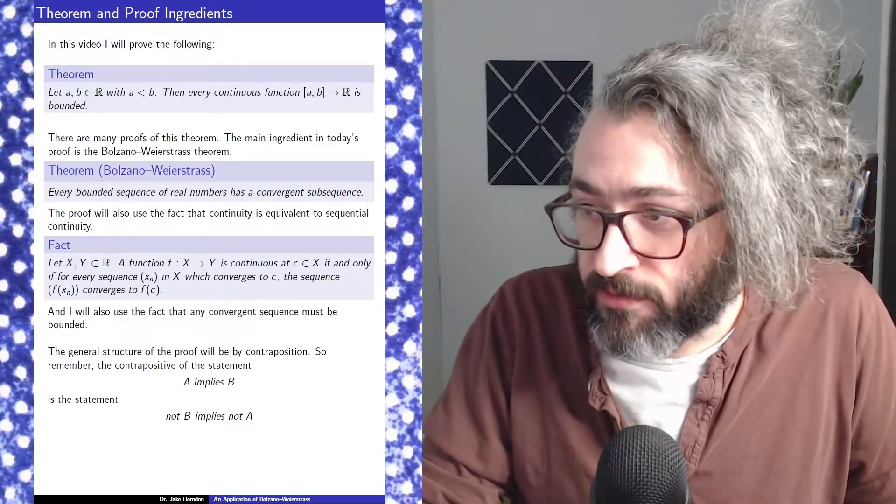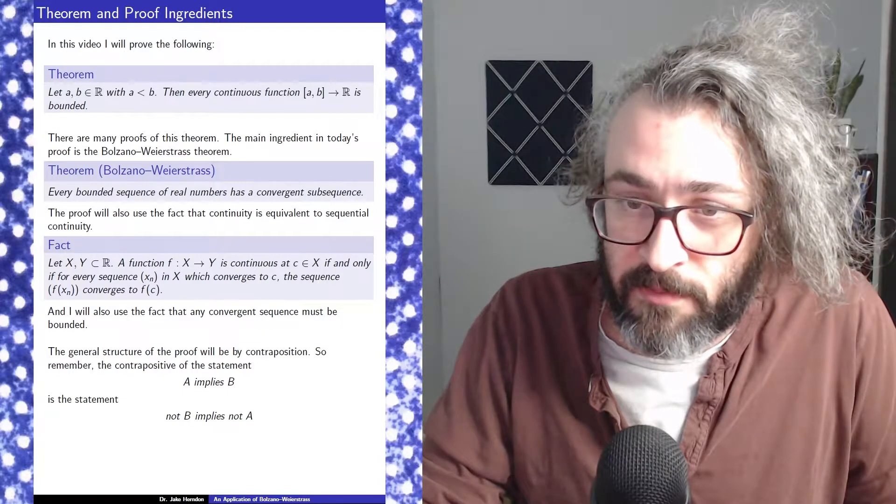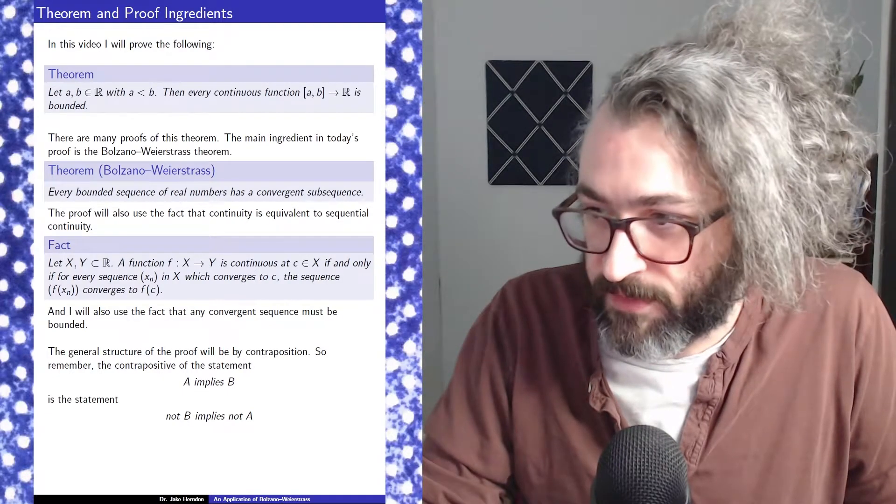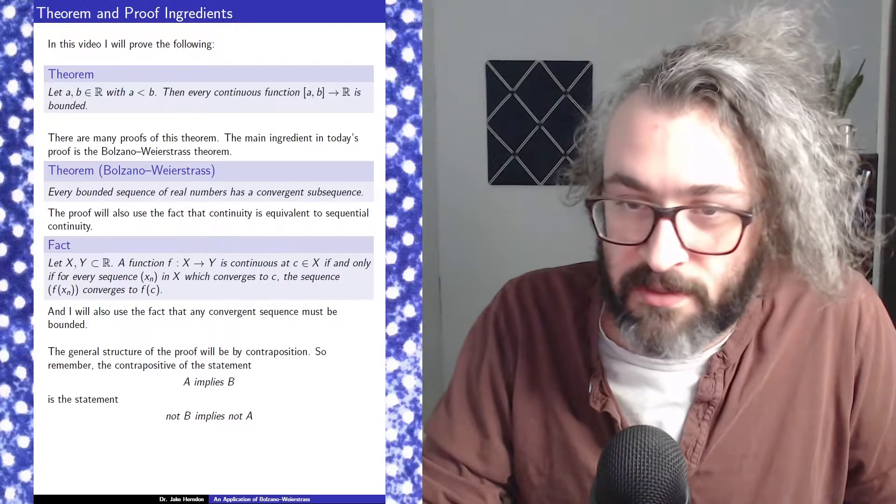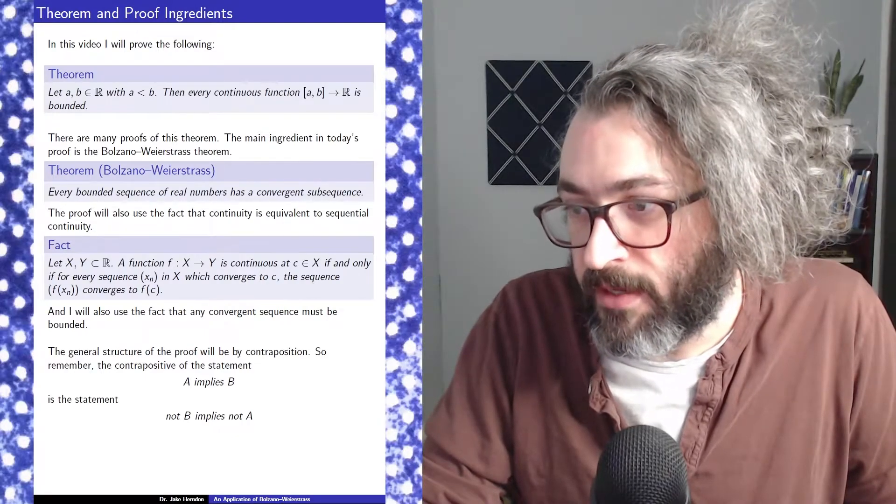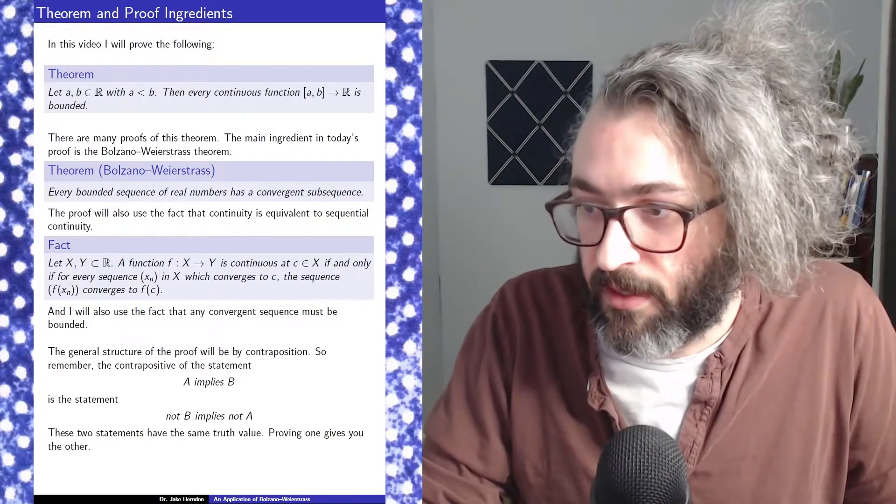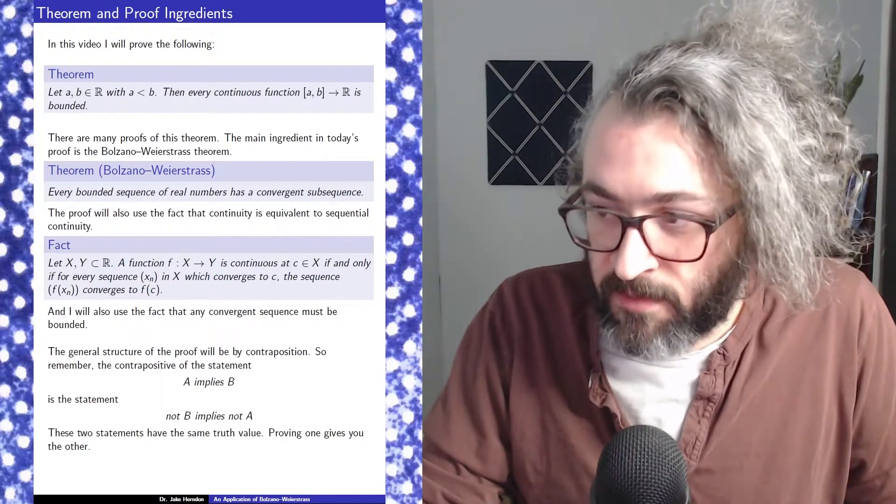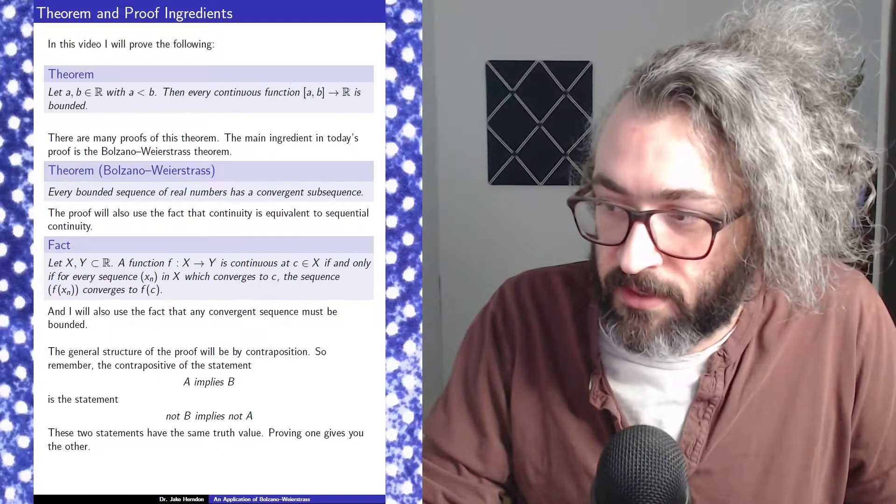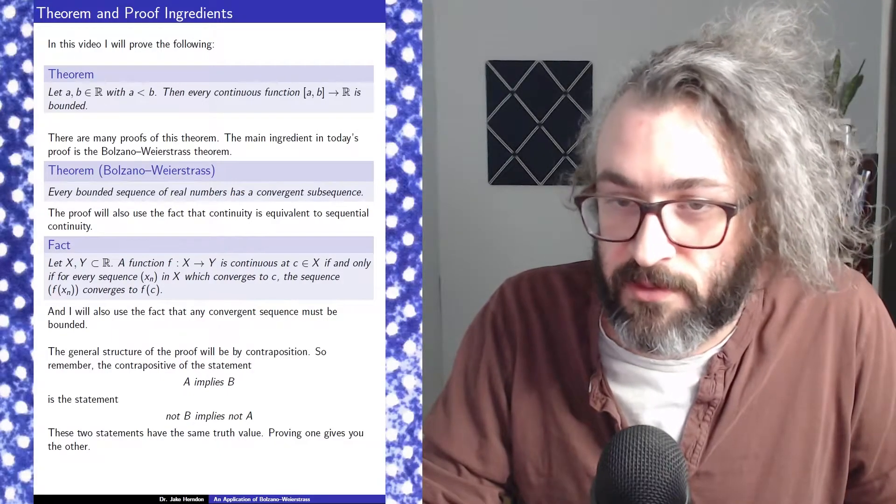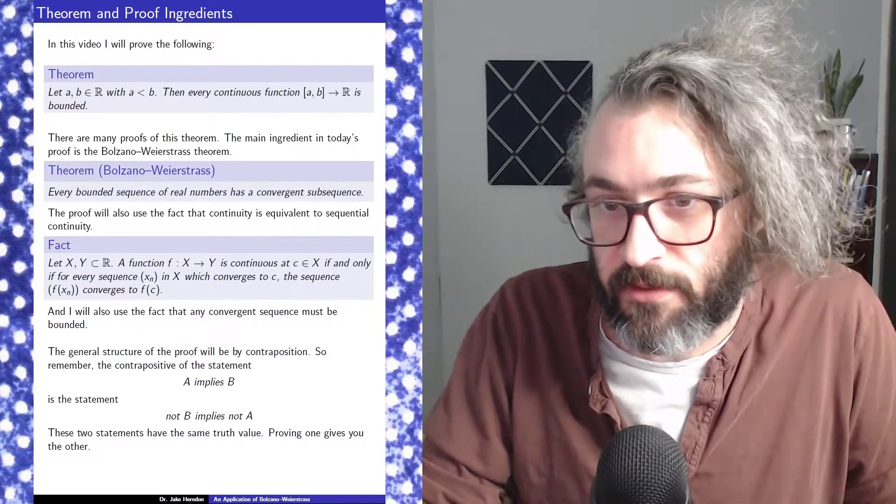And the general structure of the proof that I'm going to give is by contraposition. So remember that the contrapositive of the statement a implies b is the statement not b implies not a. These two statements have the same truth value, so proving one gives you the other. Sometimes it's easier to prove one than the other one.